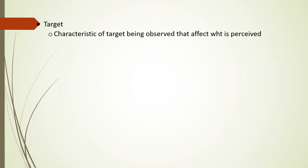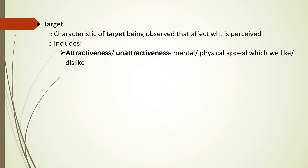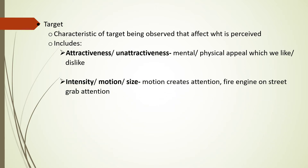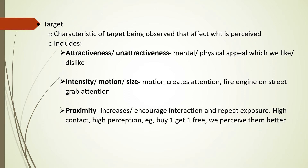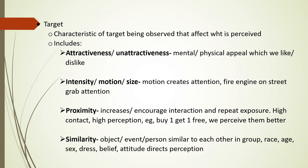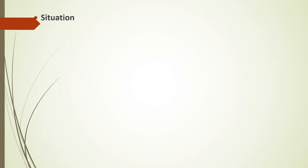The target refers to the characteristics of what is being observed that affect perception. It includes attractiveness and unattractiveness — the mental or physical appeal of what we like or dislike. It also includes intensity, motion, or size — for example, a fire engine on the street grabs attention. Proximity increases interaction and repeat exposure leads to higher perception, for example, buy one get one. Similarity concerns objects, events, and persons that are similar in group, race, age, sex, dress, belief, or attitude, which directs perception.